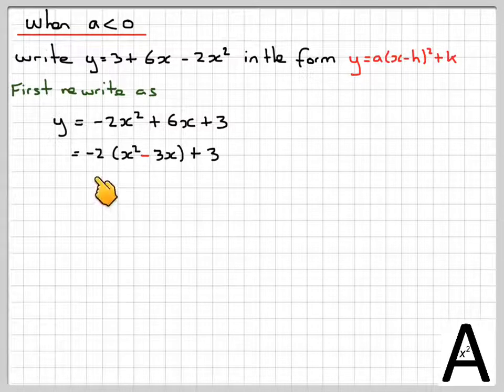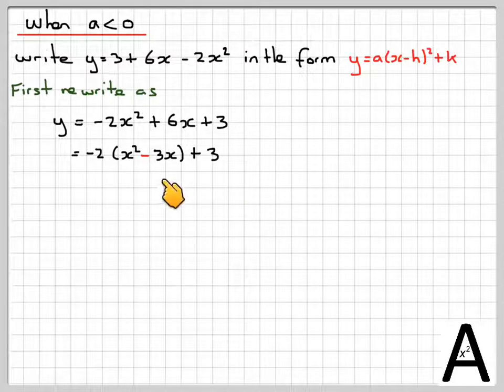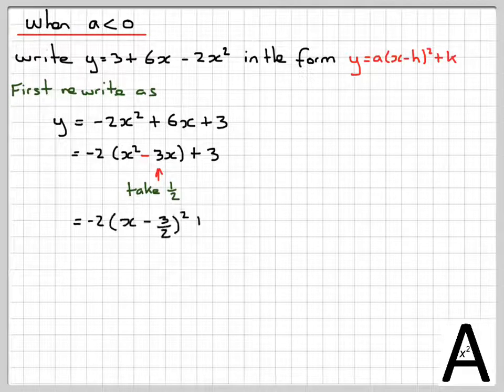When you multiply back, minus 2x squared plus 6x plus 3. Now you take half of this number here, so we're going to have minus 2 brackets x minus 3 over 2 all squared plus 3.